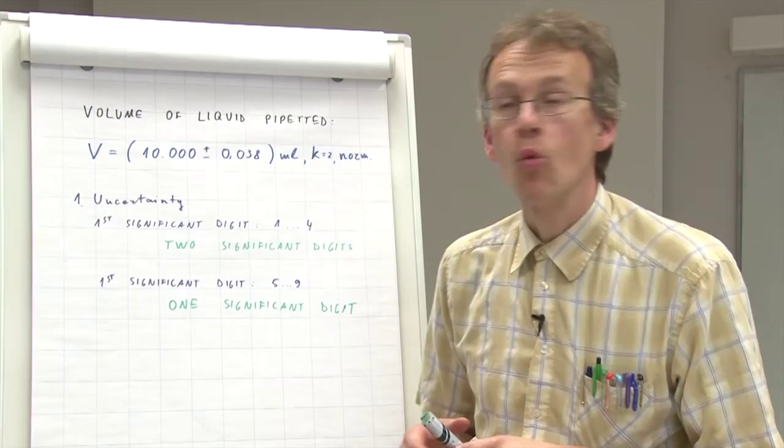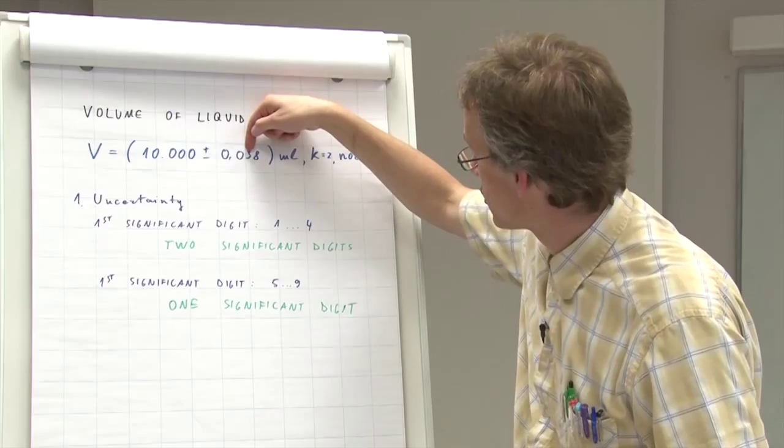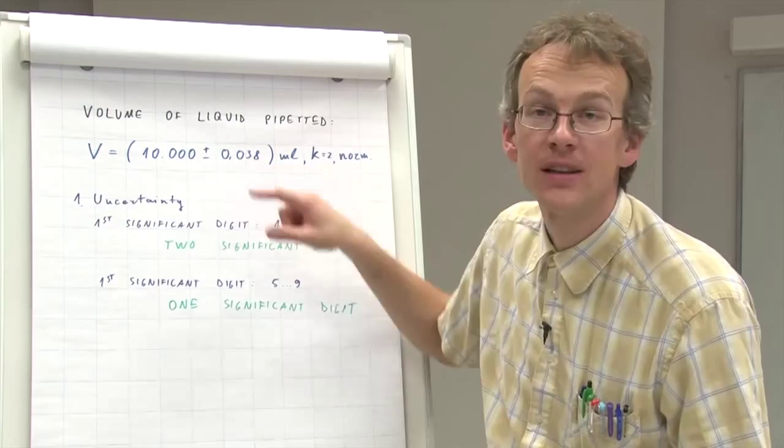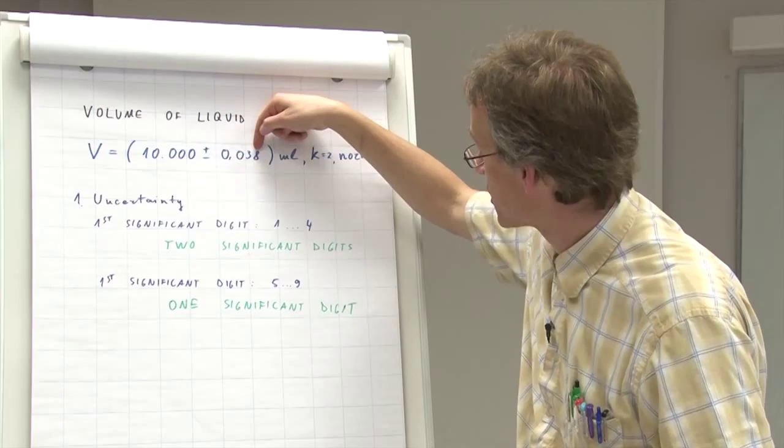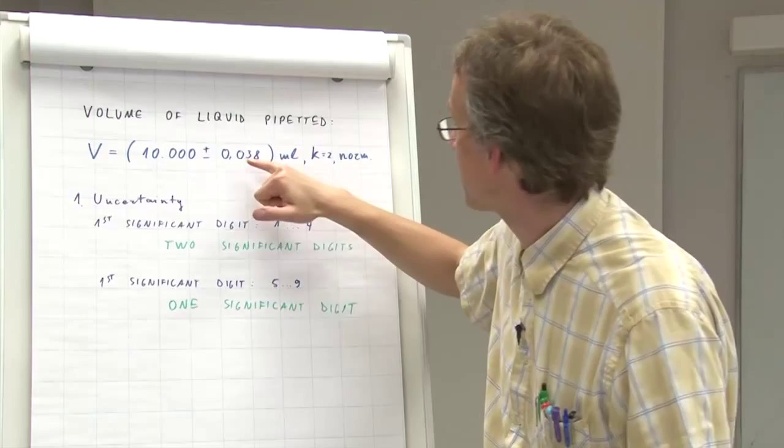So, and once we have managed to find how many digits we give with the uncertainty, and here it turns out that we give two significant digits, which in turn in this particular case means that we give three decimals, or three digits after the comma. When we have sorted this out, then we take the next step and we look at the value.